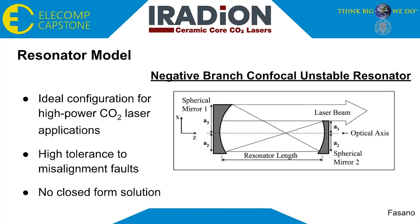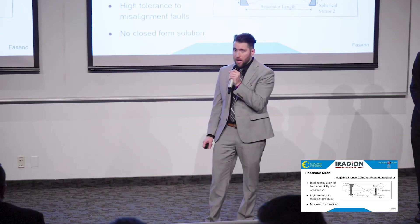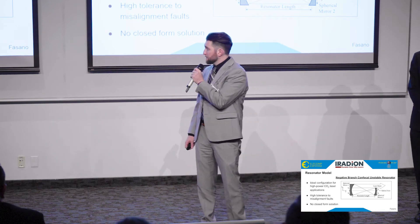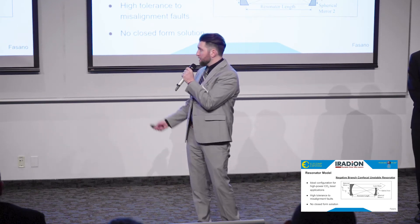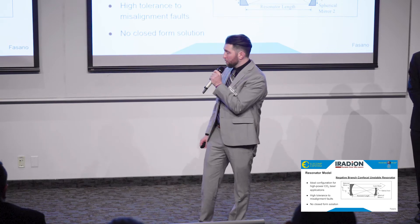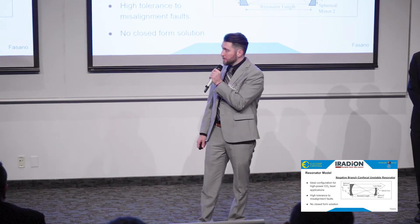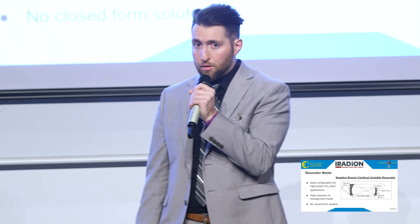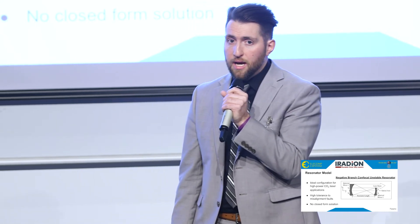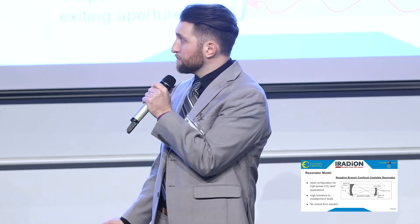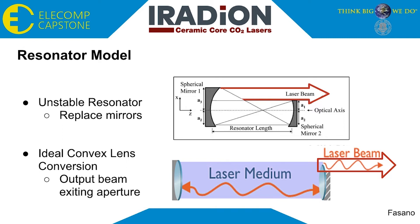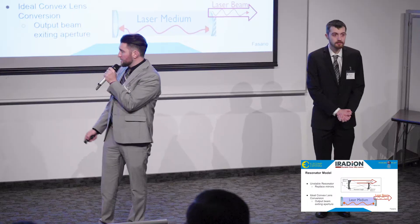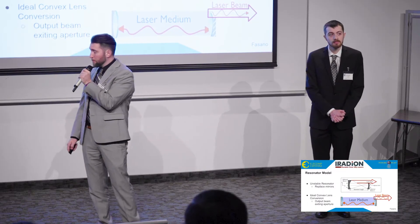The specific laser that Iradion has tasked us with modeling is known as the negative branch confocal unstable resonator. This is the ideal configuration for high-power CO2 laser applications. The mirrors on either end of the cavity are off-axis yet share a common focal point, resulting in a laser with high tolerance to mirror misalignment errors. There is no closed form solution to this type of laser, hence the need for modeling software. For modeling purposes, we replace the mirrors by convex lenses. The light then travels through the system and some escapes through an aperture, forming the output beam.